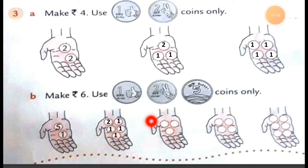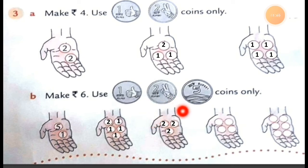Now, if we have only 3 coins, which coins are we using to make rupees 6? Let's take 1 coin of 2 rupees, 1 more coin of rupees 2, and 1 more coin of rupees 2. So, 2 plus 2 plus 2 is equal to 6 rupees. We are using 3 coins of rupees 2.